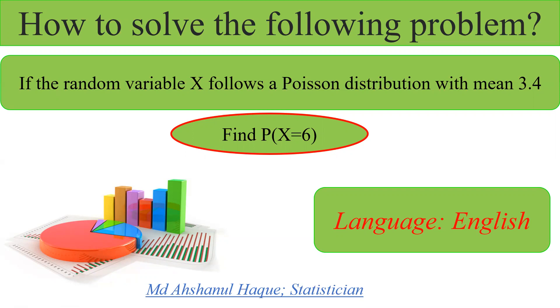That means if X is a random variable which follows the Poisson distribution with mean 3.4, then what is the probability of X is equal to 6? That means we have to calculate the probability where X is equal to 6.